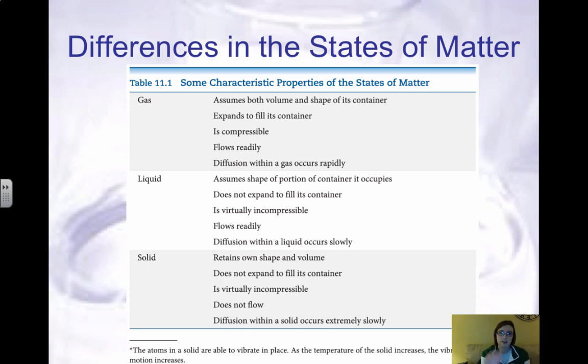So differences in the states of matter. This is table 11.1 from your book. It describes key characteristics of each state of matter. A lot of these you're probably familiar with, but it's important to keep this in mind as we work through and continue to reference them. Gases take the volume and the shape of the container. They're easily compressible.